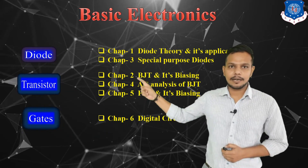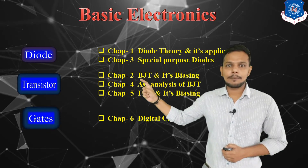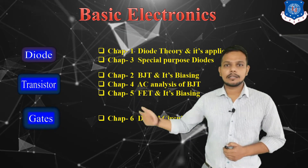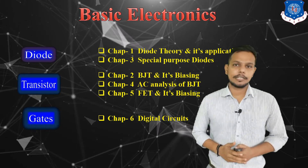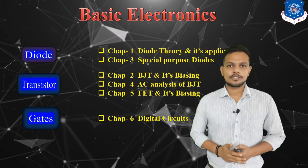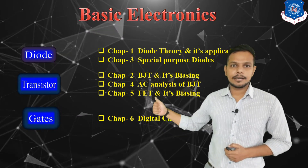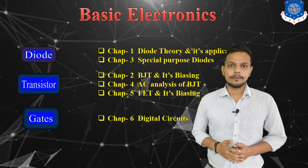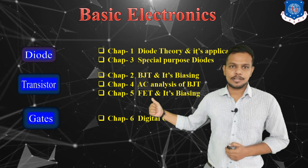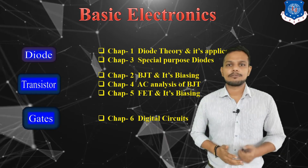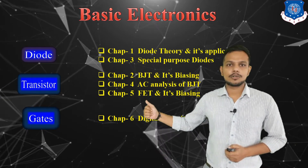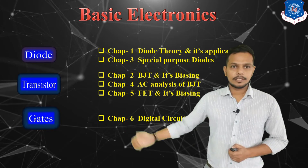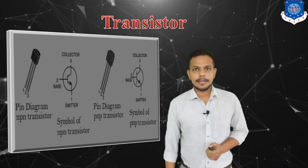These two chapters are connected with the bipolar junction transistor, which is the first type of transistor. Chapter number five covers the other type of transistor, FET and its biasing. FET and MOSFET are field-effect transistors. FET means field effect transistor and MOSFET means metal oxide semiconductor field effect transistor. In this chapter we are going to discuss about the working principle of FET and its biasing.